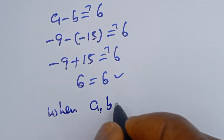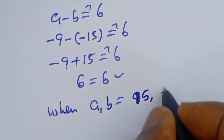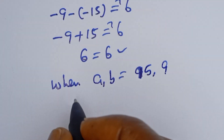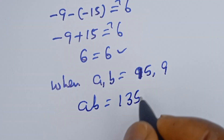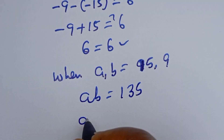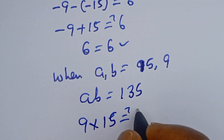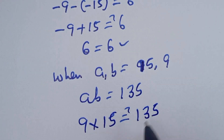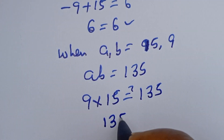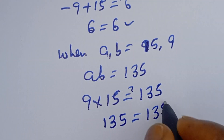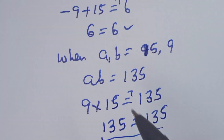Now let's consider the second value. When (A, B) is equal to (15, 9), then AB is equal to 135: 9 multiplied by 15 must be equal to 135, which is equal to 135. This is confirmed. I hope you enjoyed the video — please don't forget to like, share, comment, and subscribe to my channel. Thank you, bye bye!